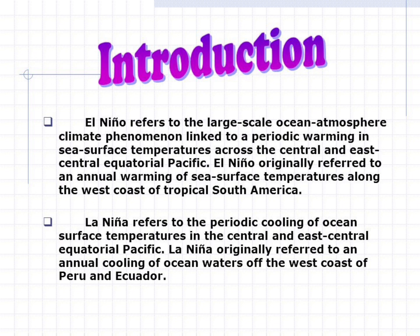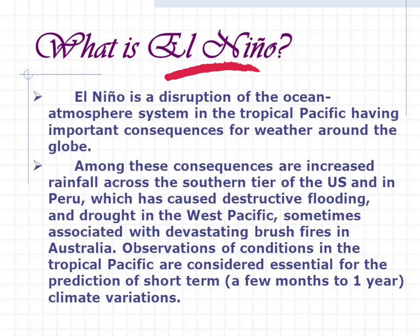El Niño originally referred to an annual warming of sea surface temperatures along the west coast of tropical South America. La Niña refers to the periodic cooling of ocean surface temperatures in the central and east-central equatorial Pacific, originally referring to an annual cooling of ocean waters off the west coast of Peru and Ecuador.